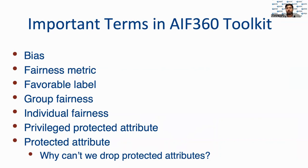Fairness metric is a quantification of unwanted bias in training data or models. Favorable label is the value corresponding to an outcome that provides an advantage to the recipient. Group fairness represents the goal of groups defined by protected attributes receiving similar treatments or outcomes, while individual fairness represents the goal of individuals receiving similar treatments or outcomes.